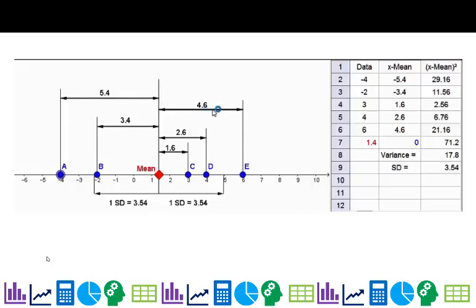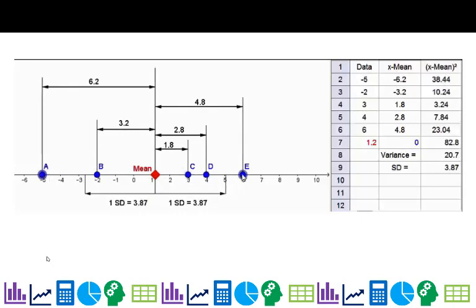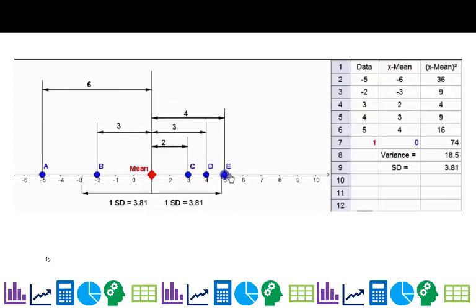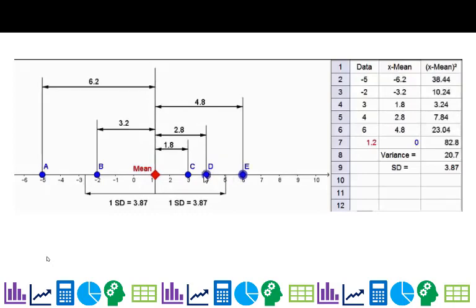If I wanted to look at the spread of the data, one thing I could do is look at all these numbers here. E is 4.6 above the mean, D is 2.6, C is 1.6 above the mean. A and B are both below the mean. The software is showing the negative here. These are called the deviations, which is the distance from the point to the mean. I can't really use the total deviation because that's zero, and zero is not going to tell me a lot about the spread.